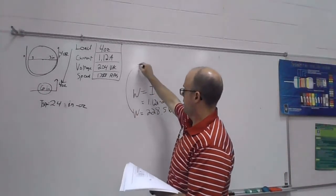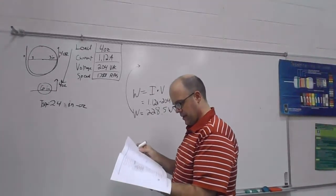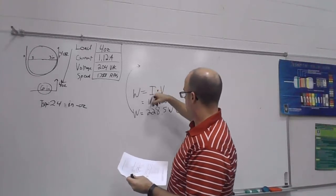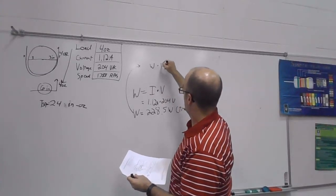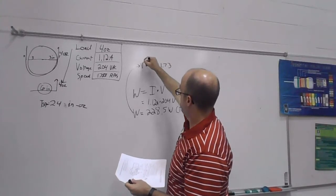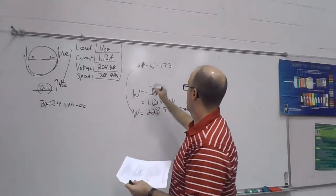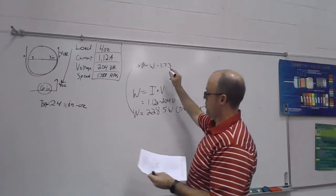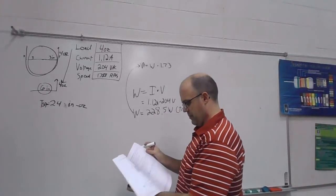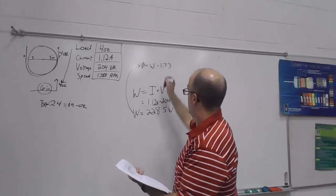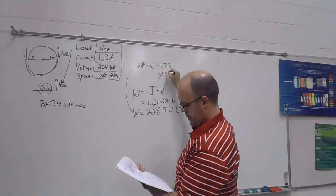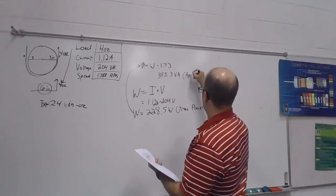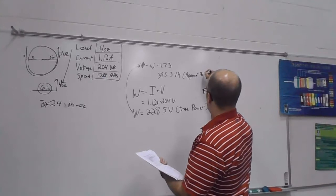So if I take this number here, and multiply it by, so take your true power, your wattage, and multiply that by, your watts times 1.73, that will get me my VA, or my apparent power. So if I multiply these two together, I multiply this 28.5 times 1.23, that should get me, as I look at my math, 395.3 VA. And this is my apparent power.